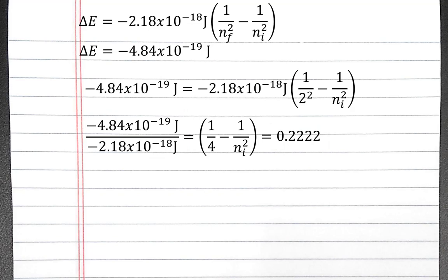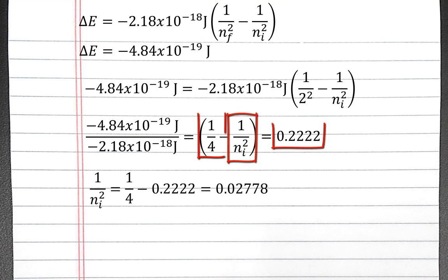Now we want to get n sub i squared on one side of the equation with our numbers on the other. So 1 divided by n sub i squared should equal 1 divided by 4 minus the 0.222. If you put this in your calculator, you should get 0.02778.